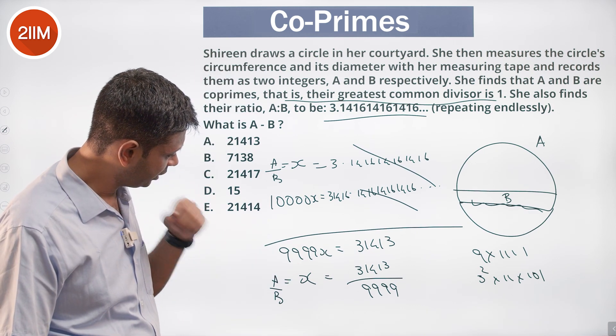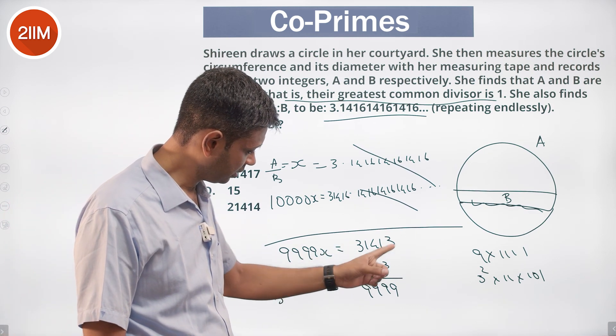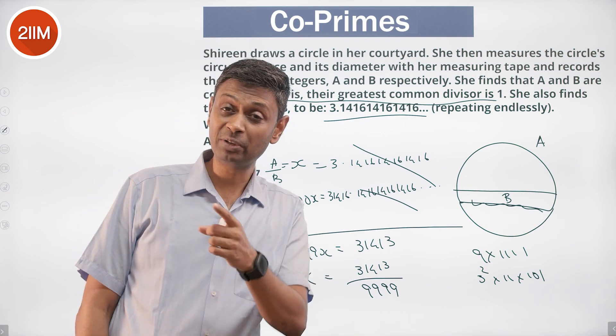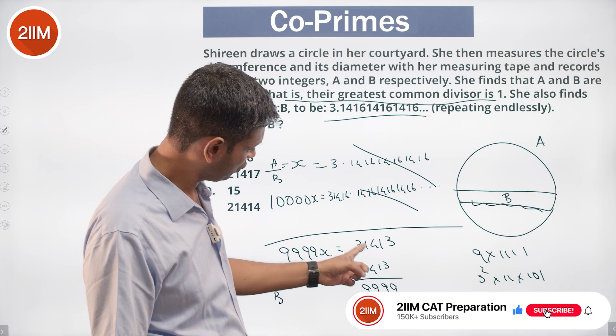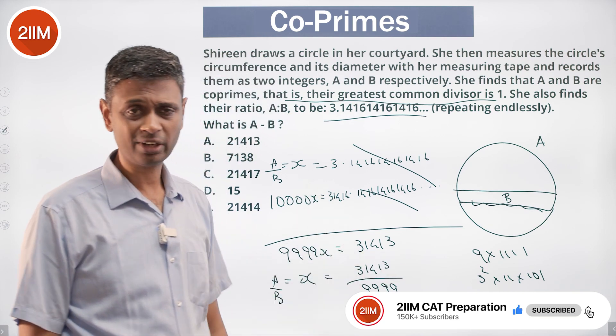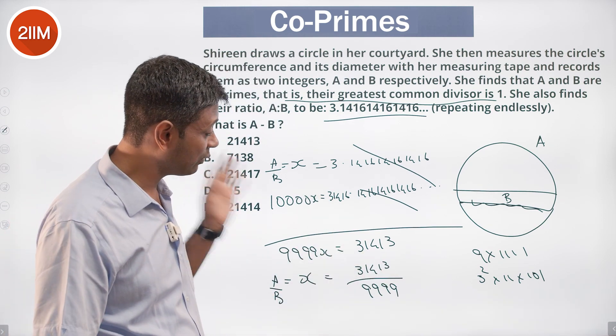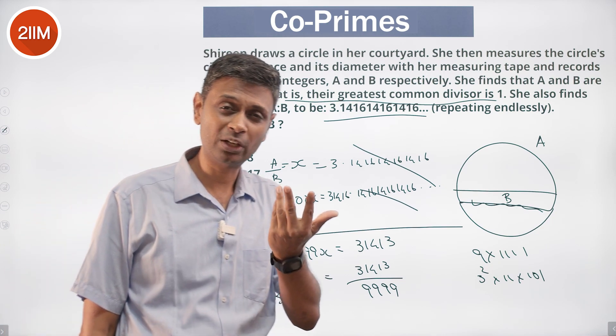31413. This is a multiple of 3. 3 plus 3 is 6, so it's a multiple of 3. So one 3 will go away. Not a multiple of 9. Is it a multiple of 11? 3 plus 4, 7 plus 3, 10, 10 minus 2. Not a multiple of 11. So a 3 will go away. Maybe a 101 will go away.